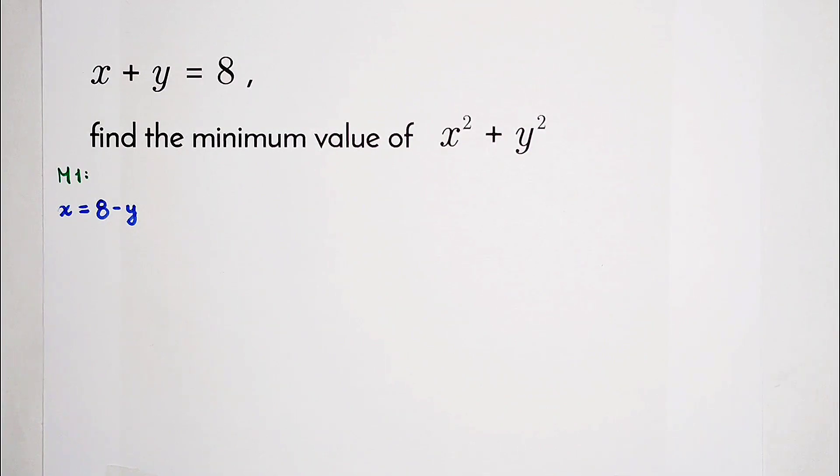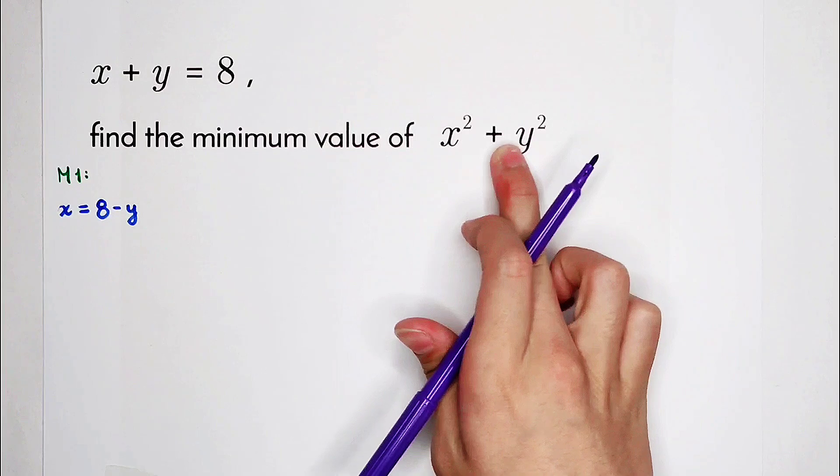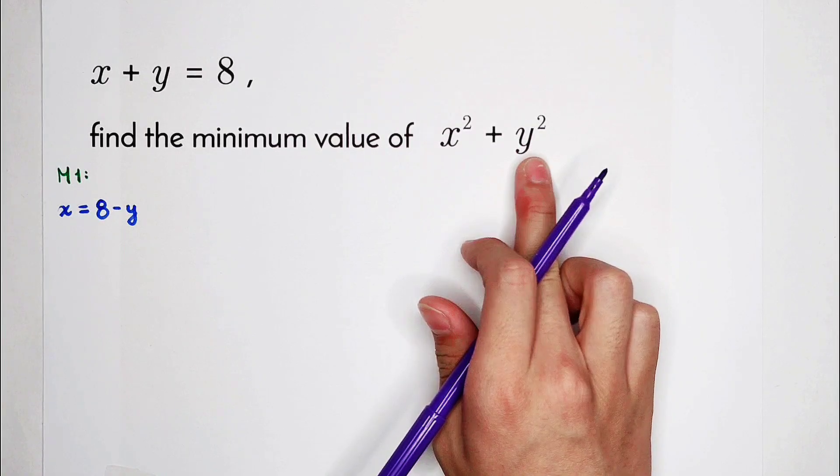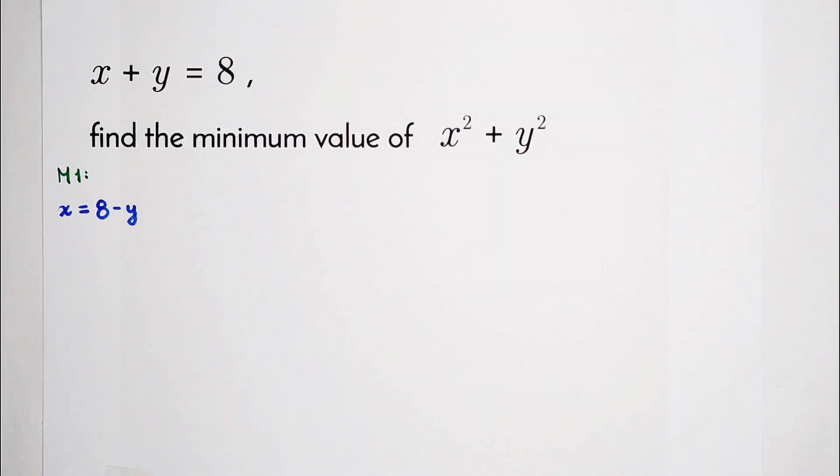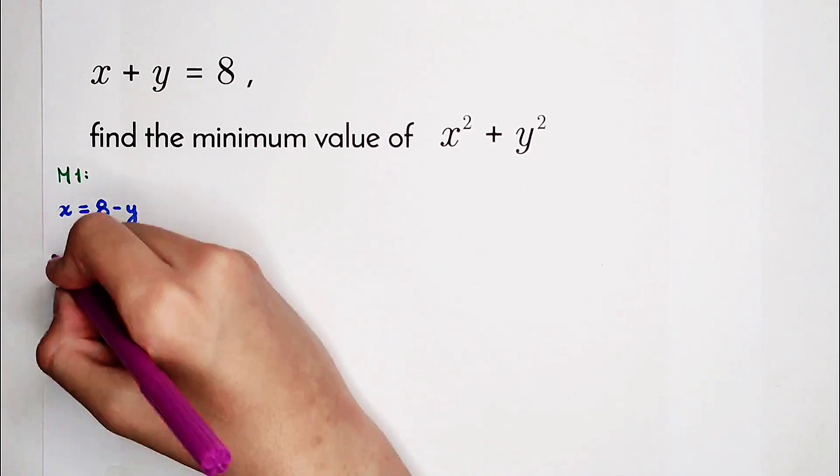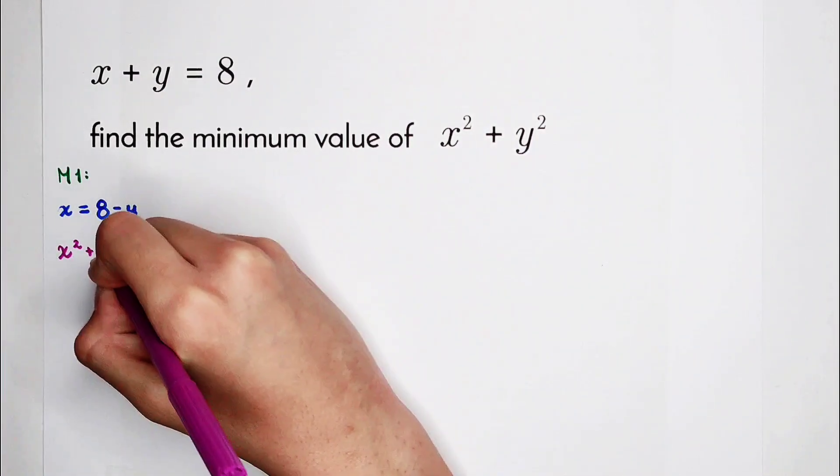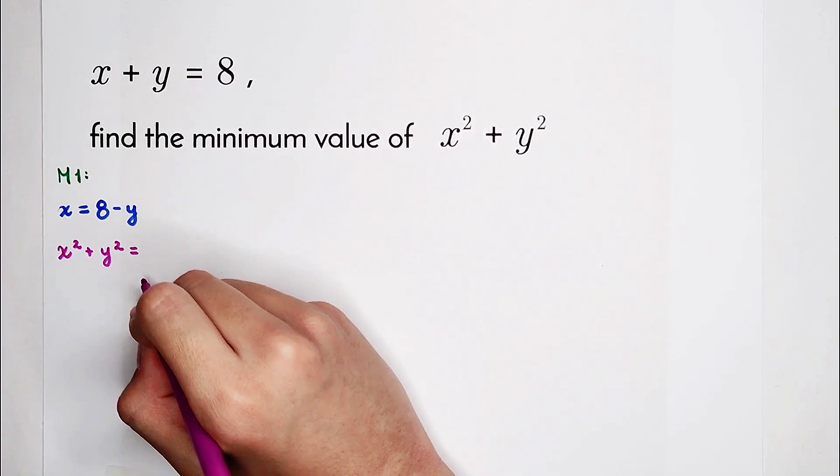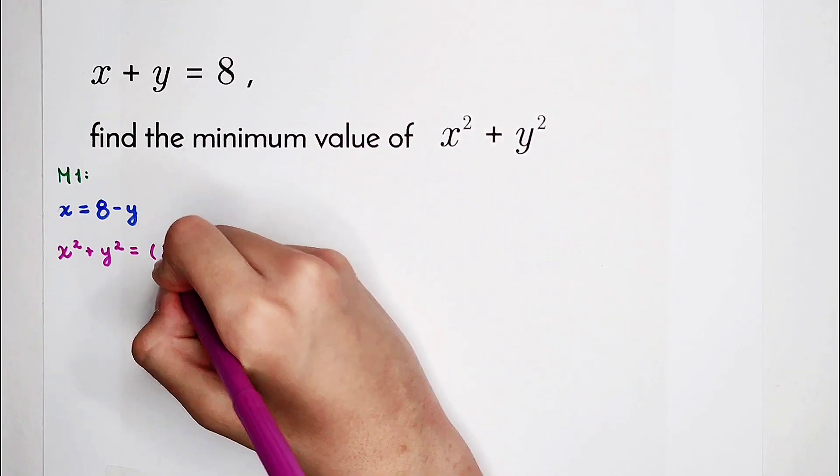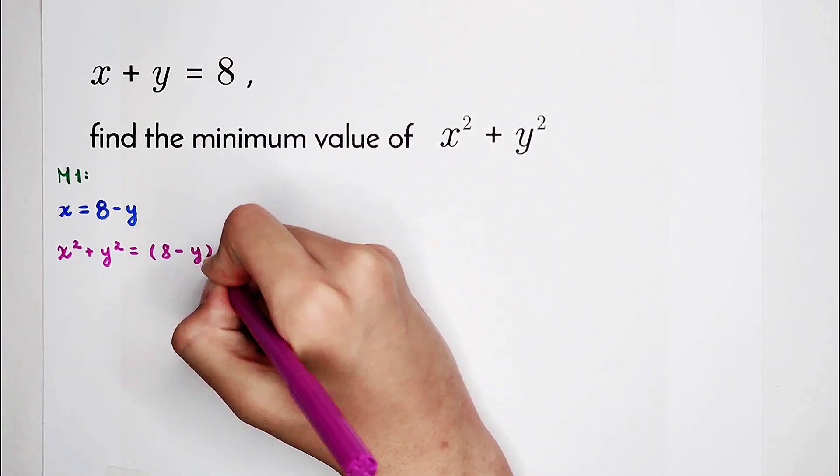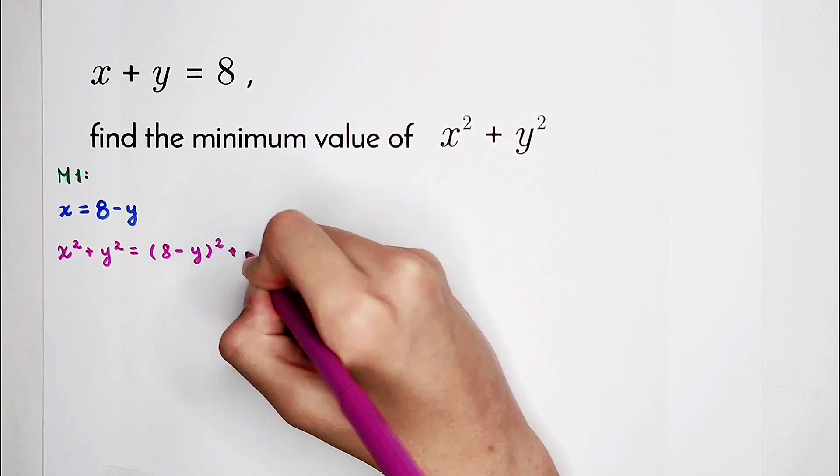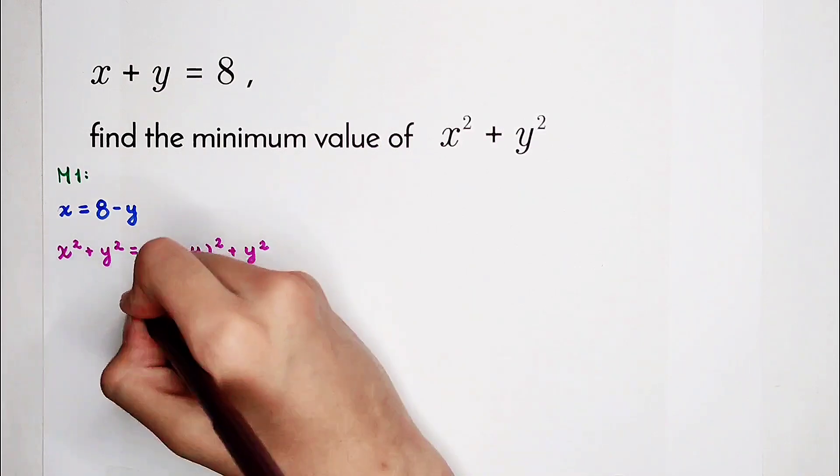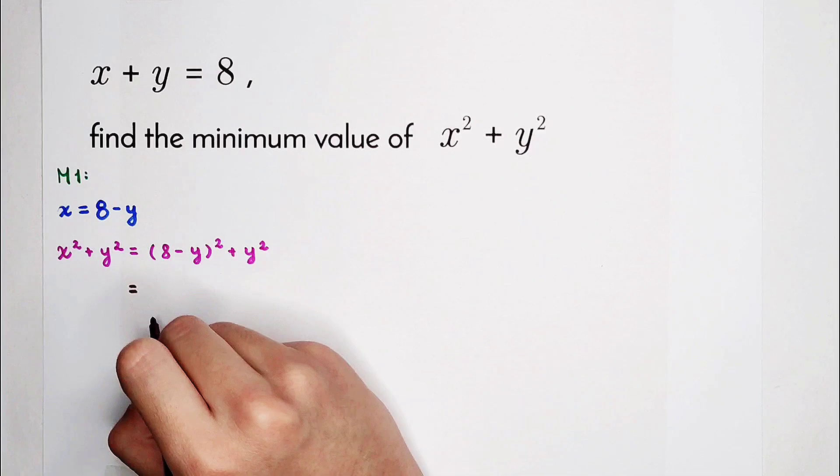And then we should substitute it into our second term. Which term is it? x squared plus y squared. We should find the minimum value of this term. So that means x squared plus y squared. Now x equals 8 minus y, so that's 8 minus y, squared, then plus y squared. So easy. And then simplify. I'm going to simplify it with you.